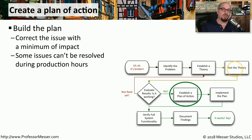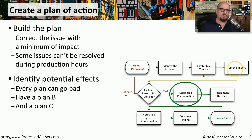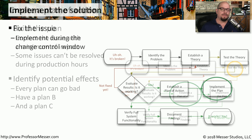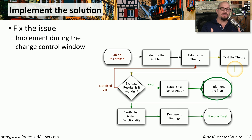We don't want to bring the system down any longer than necessary, and we want to make sure users have access to all of their data. This might mean resolving the problem during non-production hours when users are not in the building. As you write down the plan of action, consider creating a plan B or even a plan C, so if plan A runs into problems you can still resolve the issue. Once approved by the change control committee with a scheduled time frame, you can show up in the data center and begin implementation.